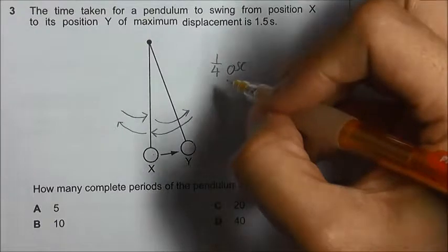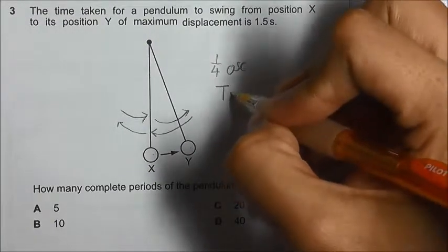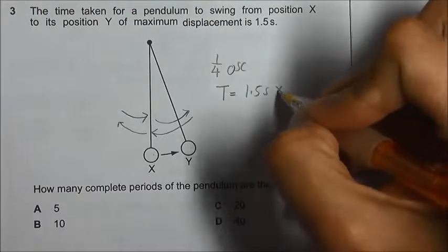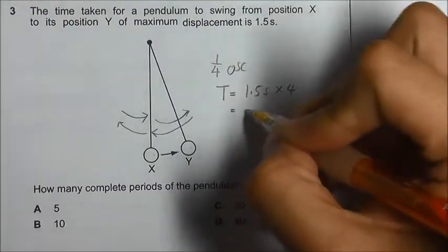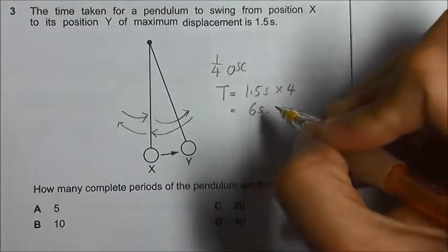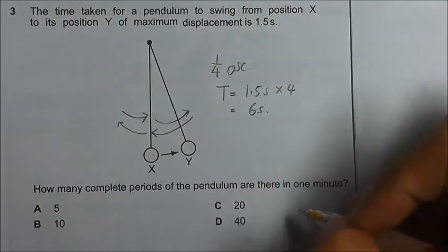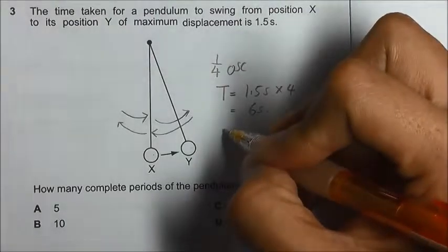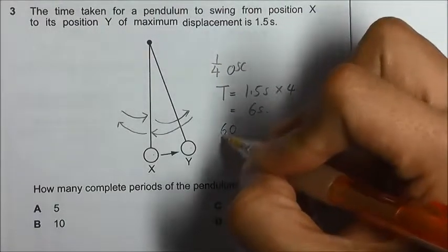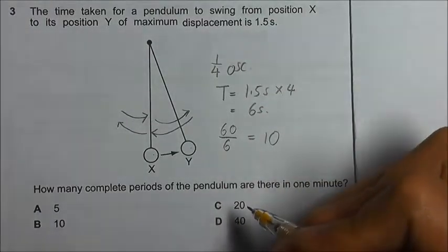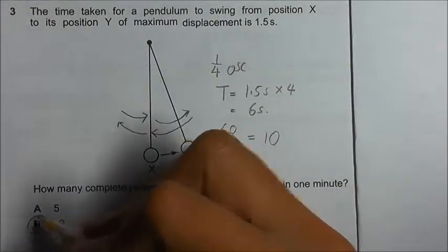So the period, which is time taken for one oscillation, will be 1.5 seconds multiplied by 4. This will be 6 seconds. And to find out how many complete periods are there in a minute, we will take 60 seconds, which is 1 minute, divided by 6 seconds. That will give us 10 complete periods. So that will be answer B.